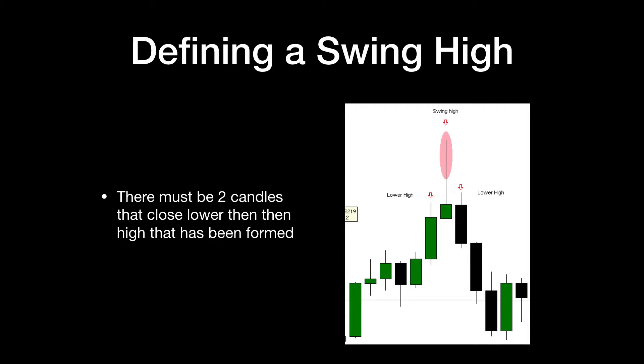If you look in the picture, you'll see the swing high, and then the candle to the left is a lower high and the candle to the right is a lower high — so that makes the one in the middle a swing high.